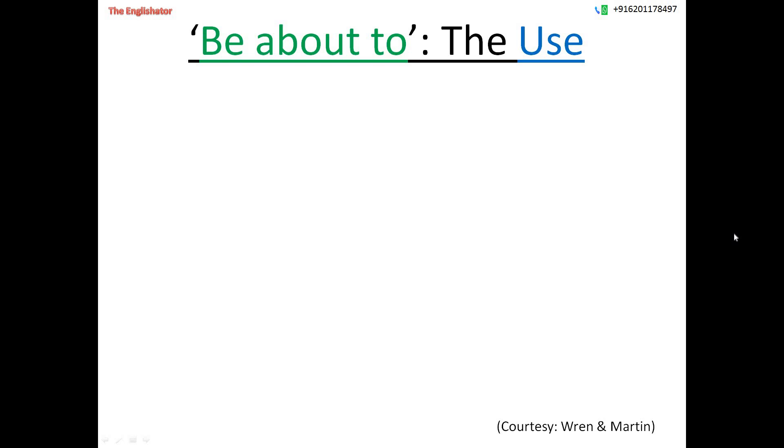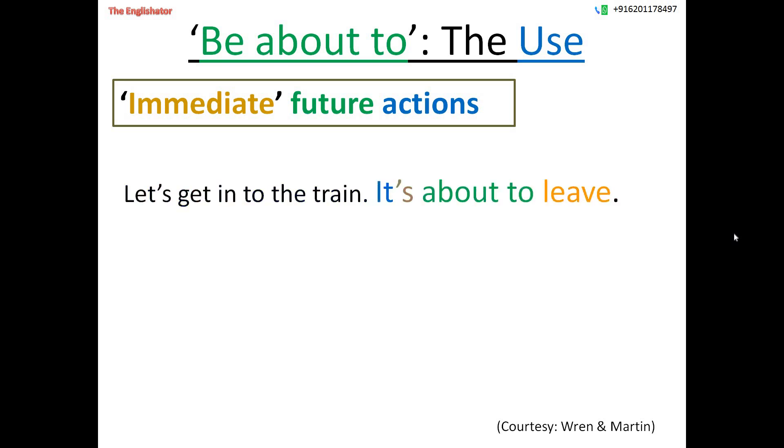So the chief use of this phrase is in expressing certain immediate future actions. For example, let's get into the train. It's about to leave. And don't go out now. We are about to have lunch. So this use of the phrase be about to is somewhat similar to the use of the phrase going to in expressing the immediate future actions or events. But there is a slight difference. We use be about to to express a bit less urgent events or actions than that expressed by the phrase going to. So this is the main use.